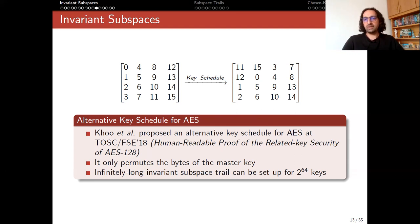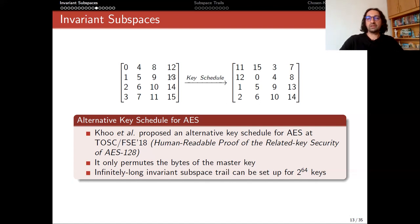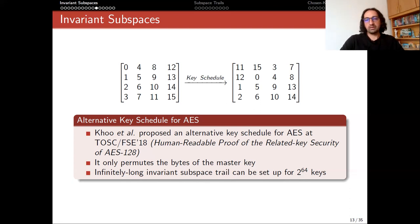If you use this key schedule instead of the original AES key schedule, you can create an infinitely long invariant subspace for 2^64 weak keys. This is a huge problem — using such a key schedule would make AES really insecure. If you accidentally choose a weak key, your security is lost. So when designing a key schedule, you have to be careful about the symmetries you use. Even if you just switch the places of two of these bytes, that key schedule would be resistant to our invariant subspace attacks.